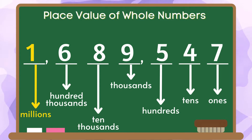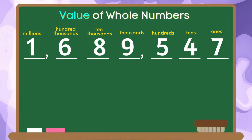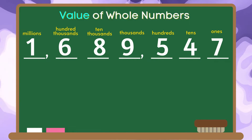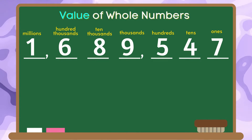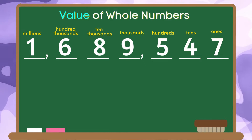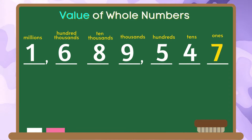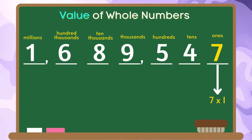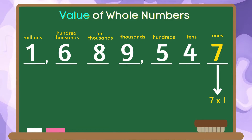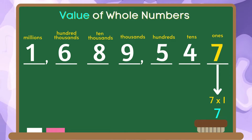After identifying the place value of each digit in this number, we will now identify their value. To identify the value of the digit, we are going to multiply the digit by the corresponding value of each place value. For the digit 7, since it has the place value of ones, we are going to multiply 7 by 1. 7 times 1 is equal to 7. Therefore, the value of the digit 7 in this number is 7.